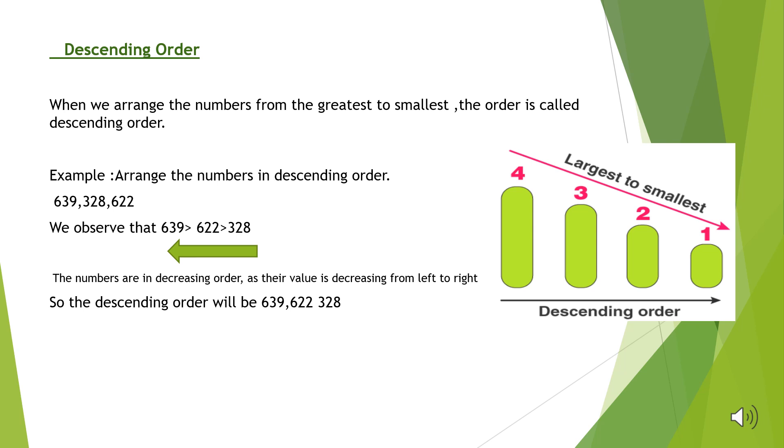We will observe the digit in the hundreds place. We will compare their tens digit: 3 in 639 and 2 in 622. As 3 is greater than 2, we can say 639 is greater than 622.